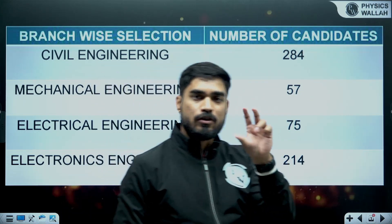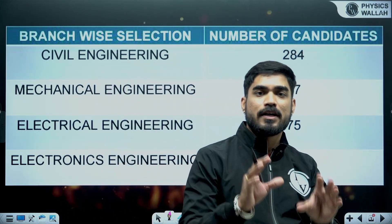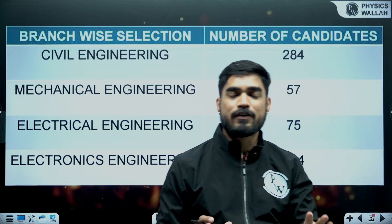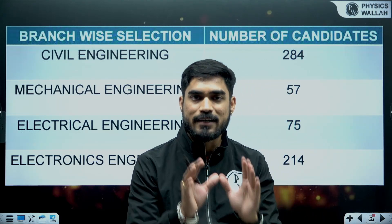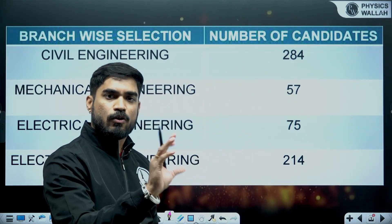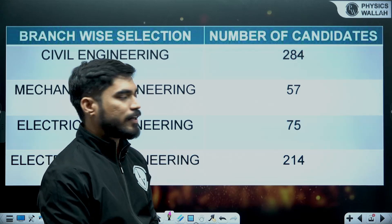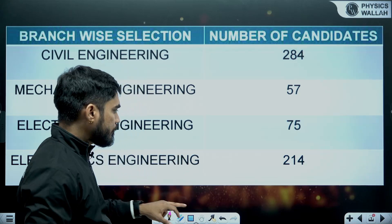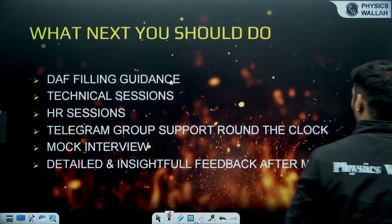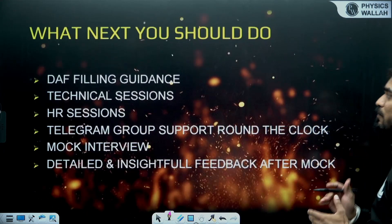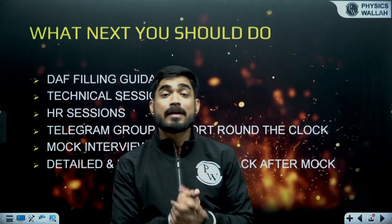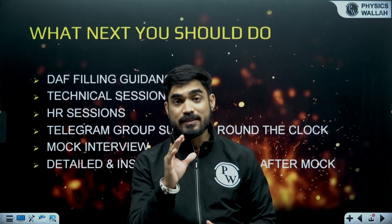So if 250 students are selected after the mains exam, that means there are 100 vacancies — it's a 1:2.5 ratio. Now let's talk about the next step — what you should do after the mains exam.